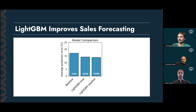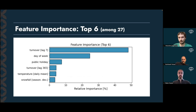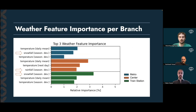The differential contribution of temporal and weather features was also reflected in the relative feature importance. As you can see in this graph, temporal features contributed most to the model predictions. Specifically, the turnover seven days ago was most important with a relative feature importance of nearly 50 percent, followed by the day of the week, public holidays, and the turnover one year ago. Mean daily temperature ranked fifth, followed by seasonal deviation and snowfall, both showing relative feature importance of nearly three percent. Weather features did contribute, and they did so to varying degrees depending on the branch location.